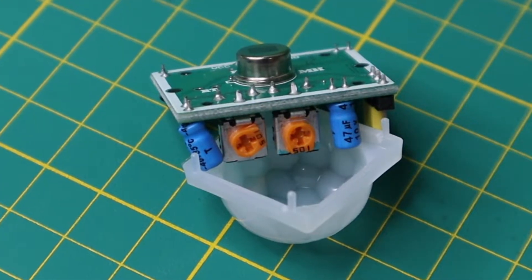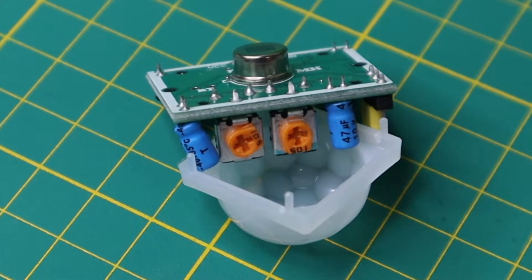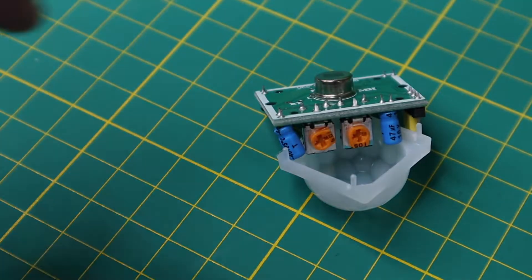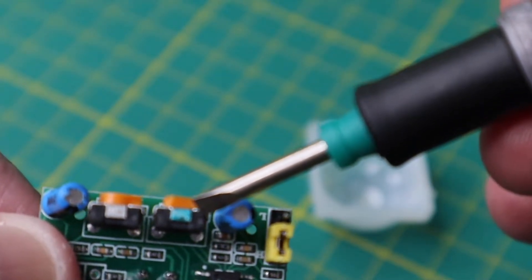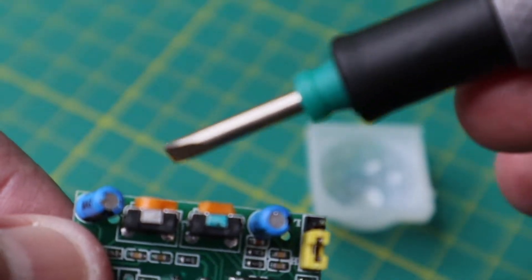On my PIR, the pots were not labeled in any way, so I had to figure out which was which. I used a marker to color the sensitivity pot. See it right there. So I know this one controls the sensitivity and this one controls the time.